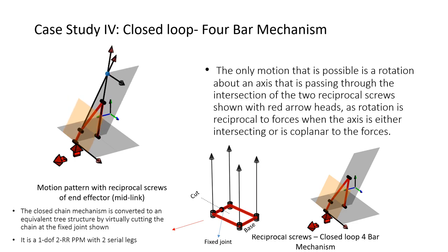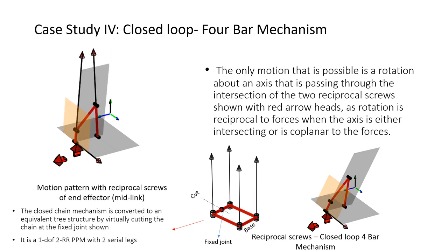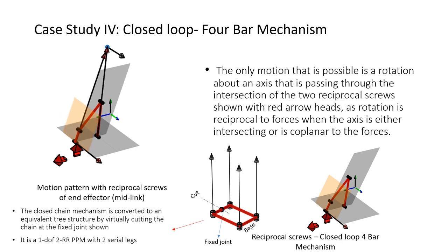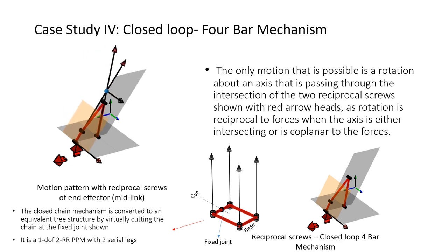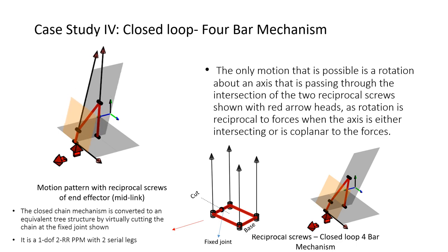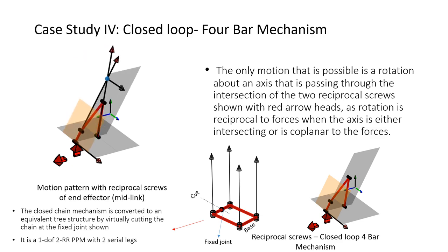Now let us look at the case of the closed loop 4-bar mechanism. The closed chain mechanism is converted to an equivalent tree structure by virtually cutting the chain at the fixed joint. It is a single-DOF 2RR planar parallel manipulator with two serial legs. We analyze the freedom and constraints of each separate leg. The algorithm is applied to the serial legs and reciprocal screws are computed in a linear algebraic fashion. Then we combine the two legs and calculate the combined constraint applied to the coupler. For a parallel kinematic chain composed of M serial chains, the twist system is the intersection of the individual twist systems and the wrench system is the linear combination of the individual wrench systems. There exist in total three constrained wrenches for the planar mechanism: a constrained force in the direction of the z-axis orthogonal to the plane of the mechanism, and two constrained couples in the direction of x and y-axes that limit rotation. Therefore, the planar 4-bar mechanism can only produce a rotation with respect to the z-axis.